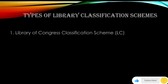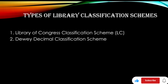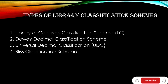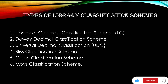Types of library classification schemes: one, Library of Congress classification scheme (LC); two, Dewey Decimal Classification scheme; three, Universal Decimal Classification (UDC); four, Bliss Classification scheme; five, Colon Classification scheme; and six, Moys Classification scheme.